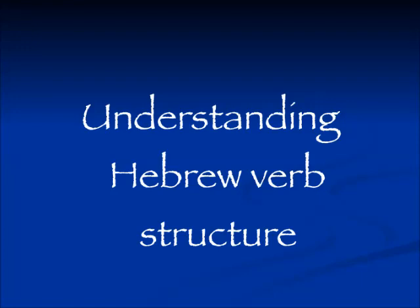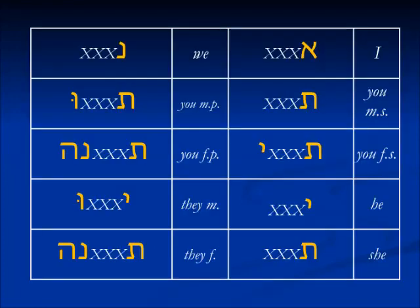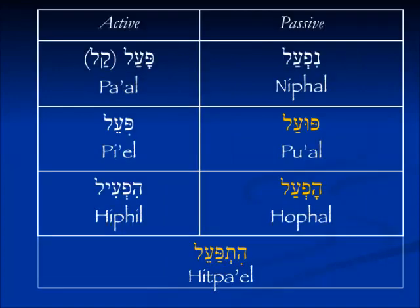Shalom. Welcome to what I believe will be the very last chapter of understanding Hebrew verb structure. We are working in the imperfect tense, and I hope by now you are familiar and have memorized the prefixes and suffixes which never change regardless of the binyam. Today we will cover the pu'al, the hofal, and the hitpa'el.